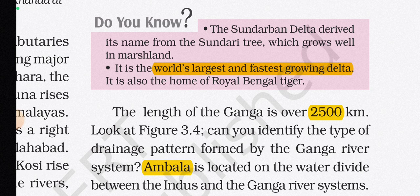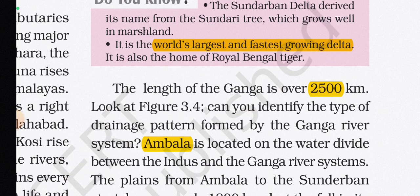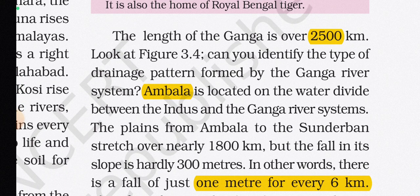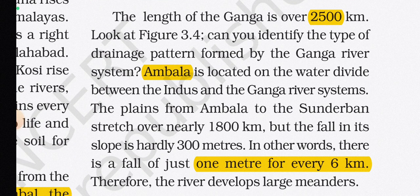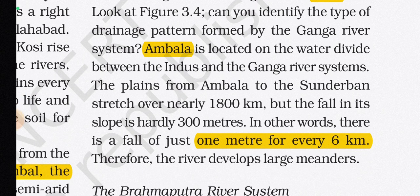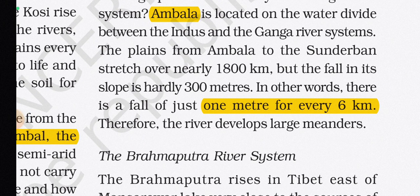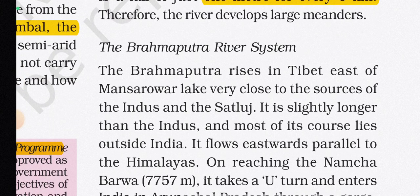The delta formed by the Ganga and Brahmaputra is known as the Sundarban Delta, which derives its name from the Sundari tree that grows well in marshland. It is the world's largest and fastest-growing delta and also the home of the Royal Bengal Tiger. The length of the Ganga is over 2500 km. Ambala lies on the water divide between the Indus and Ganga river systems. From Ambala to the Sundarbans stretches nearly 1800 km, with a fall of just one meter per six kilometers, causing the river to develop large meanders.